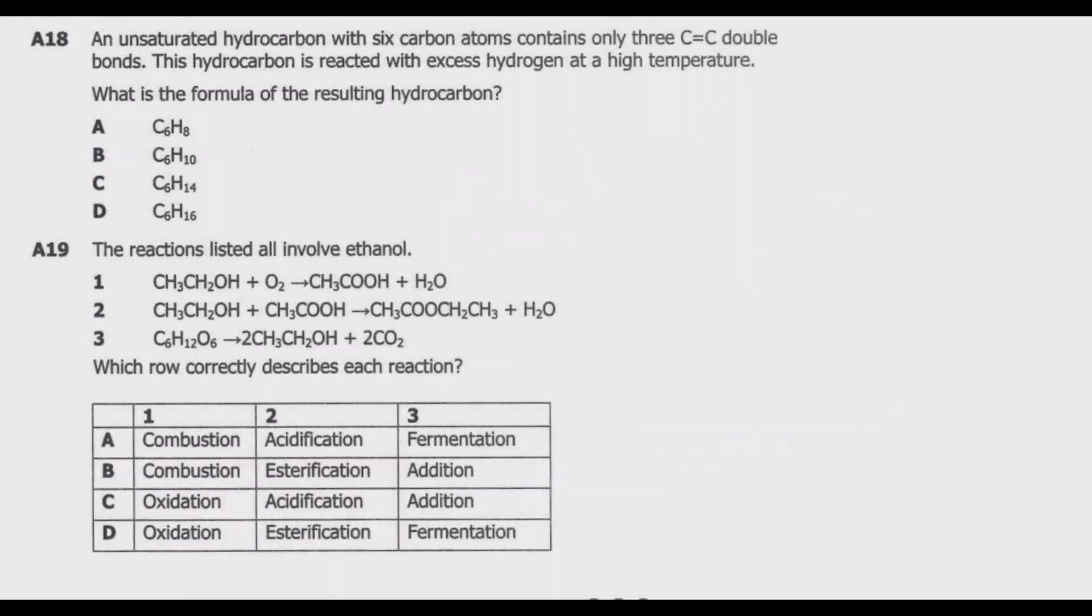Question A18: An unsaturated hydrocarbon with six carbon atoms contains only three double bonds. This hydrocarbon is reacted with excess hydrogen at a high temperature. What is the formula of the resulting hydrocarbon? The first thing is we need to look for the clues. This is an unsaturated hydrocarbon with six carbon atoms, and we are adding excess hydrogen through hydrogenation.